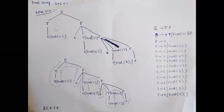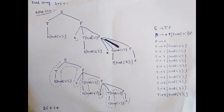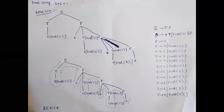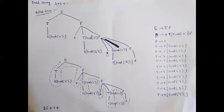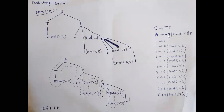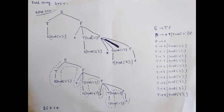To summarize the parse tree: E produces T P, where T has semantic action print('2'). P produces plus T { print('+'); } P, where T produces 6. That P produces plus T { print('+'); } P, where T produces 1 with print('1'). The last P produces epsilon. This completes the parse tree for input string two plus six plus one.